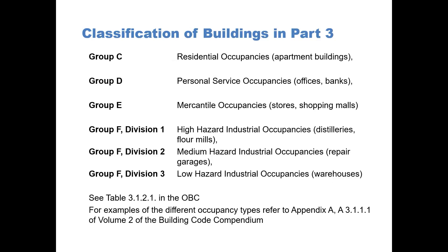Group C, Residential Occupancies, like apartment buildings. Group D, Business and Personal Service Occupancies — offices and banks. Group E, Mercantile Occupancies — basically stores and shopping malls.